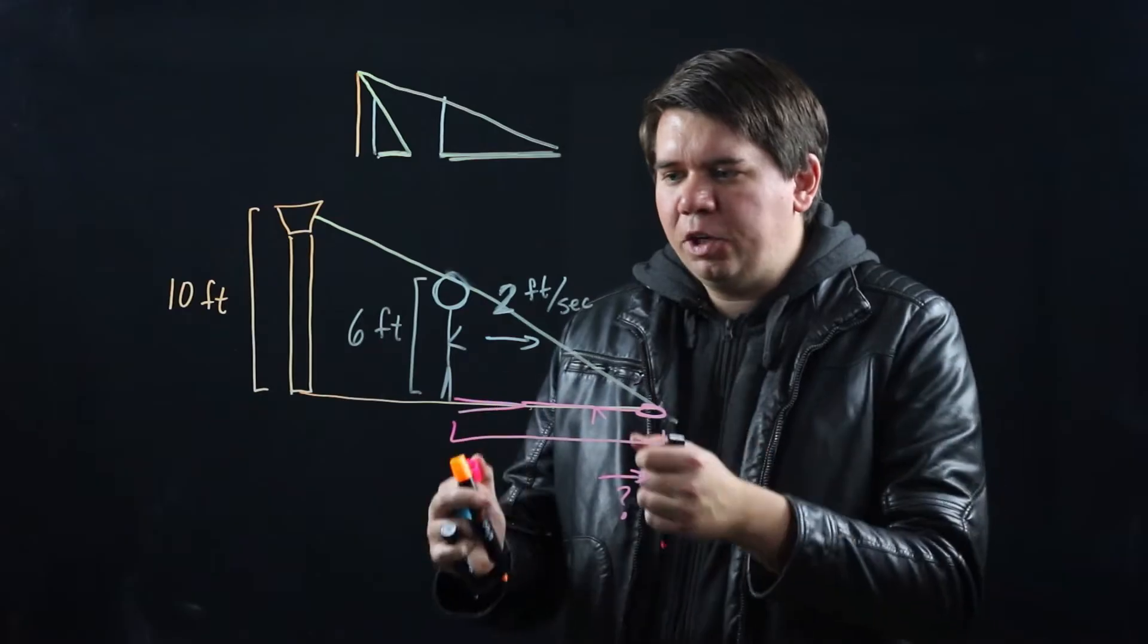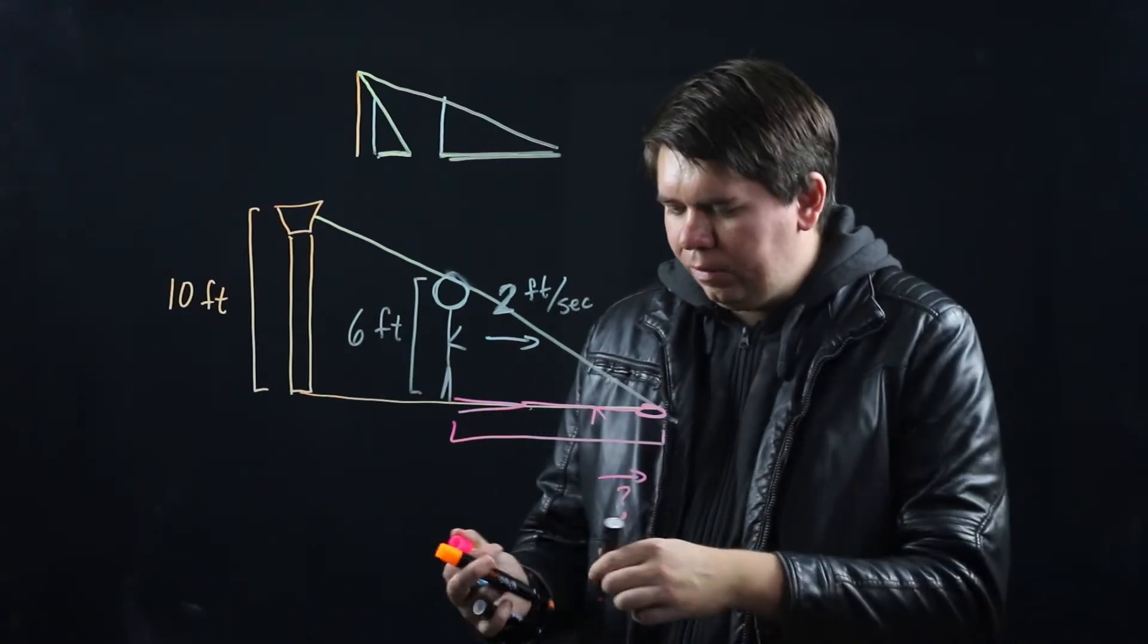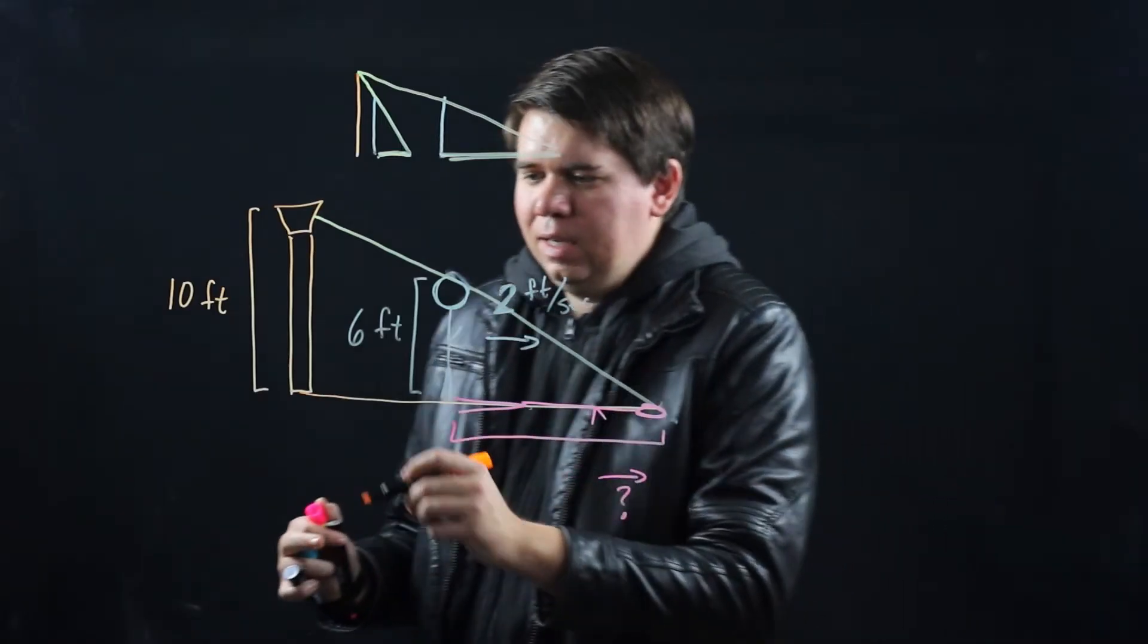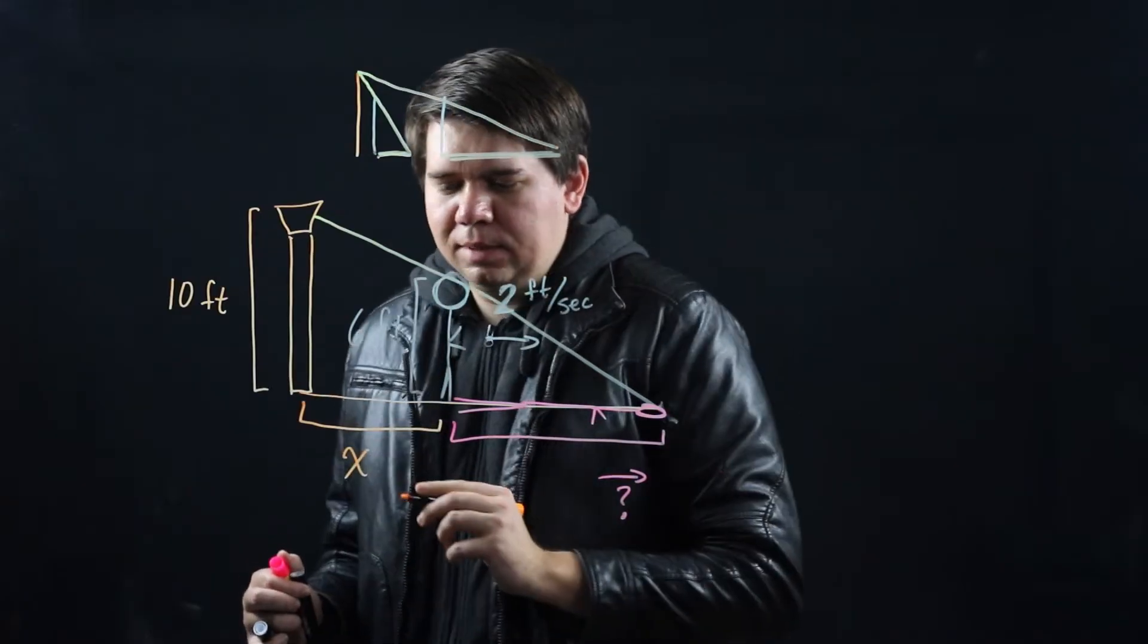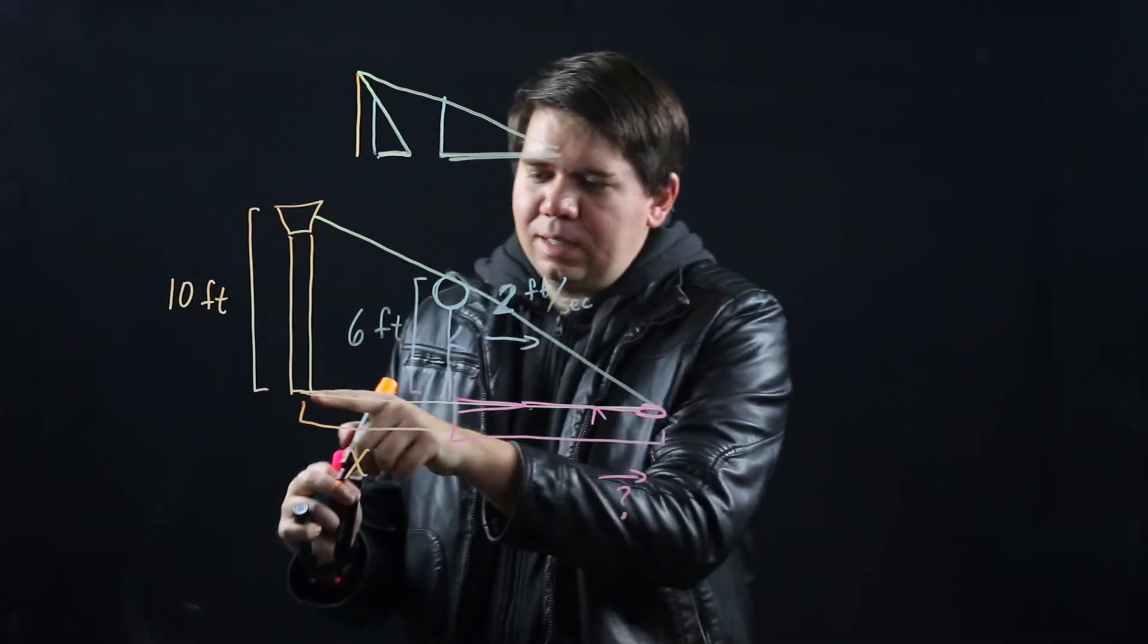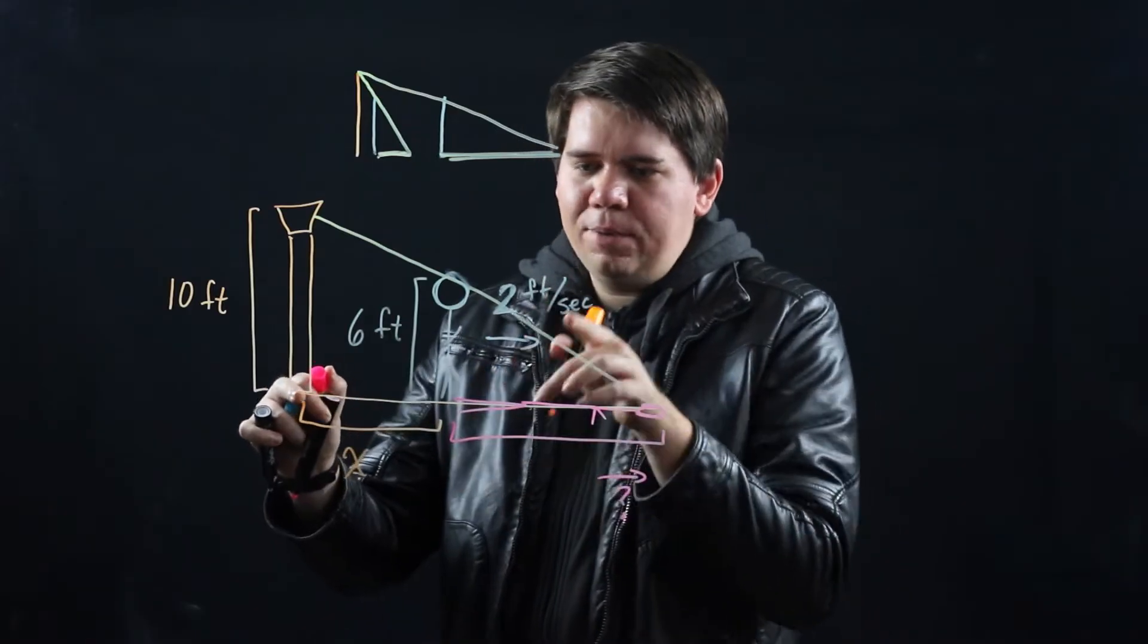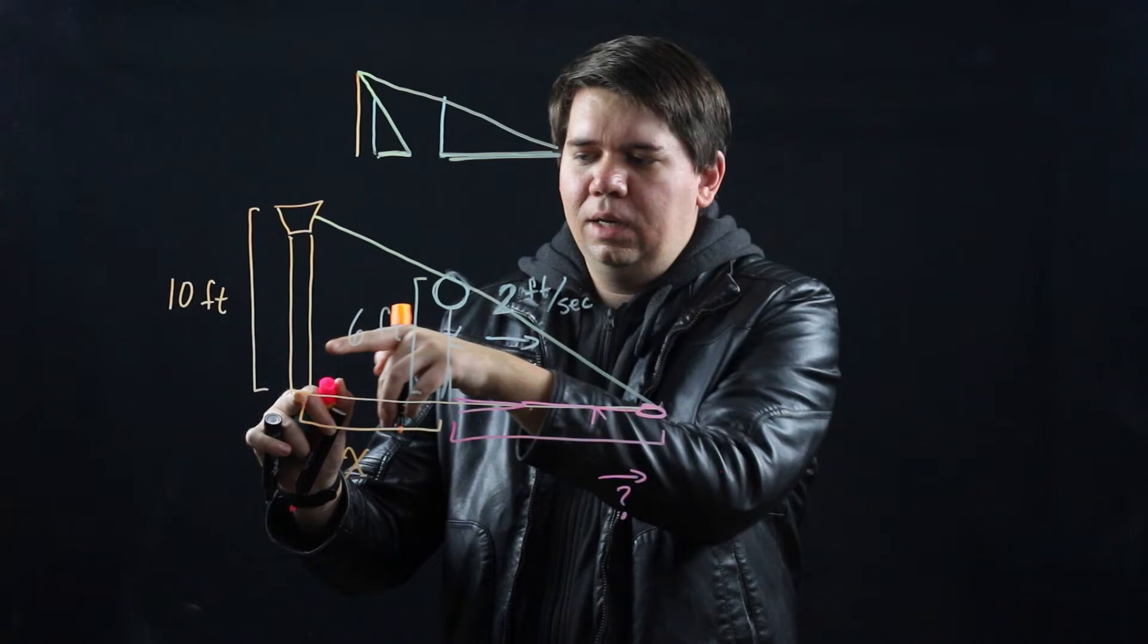So let's try to put some variables on this and see if we can find a relationship. First of all, let's say that the person's distance from the lamppost is some distance x. That seems like a good name for the distance from the lamppost. Then if that distance is x, notice them walking is increasing that distance.